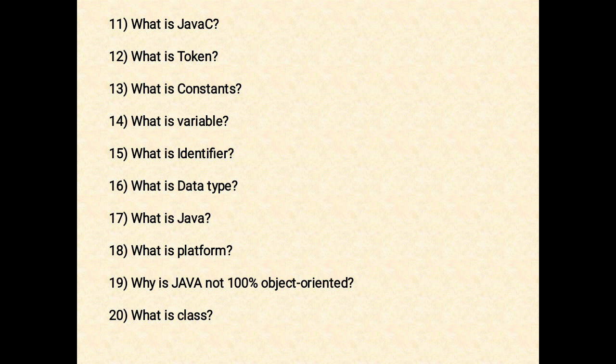The next question: what is a data type? A data type gives information about the type of data which is to be stored in a variable. The next question: what is Java? Java is a general-purpose, concurrent, object-oriented, class-based runtime environment which consists of JVM, which is the Java platform. Any hardware or software environment on which a program runs is called a platform.